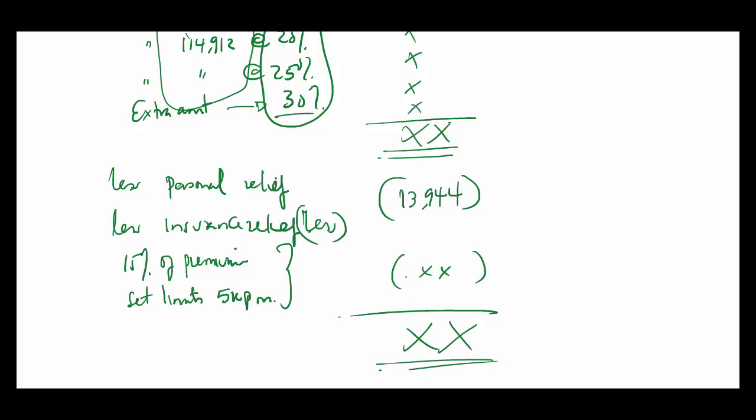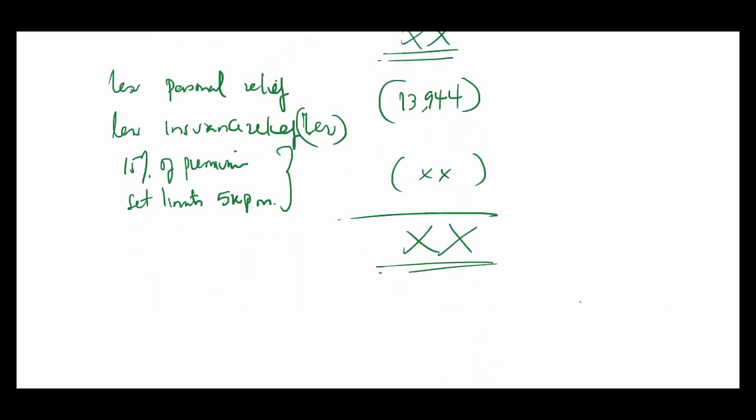Now in case you are told in the question that there was already PAYE deducted at source, you'd also have deducted it. Or if you're dealing with an income whereby the withholding tax is not the final tax—let's say you're dealing with dividends from a cooperative society or interest from a cooperative society which are not among the prescribed financial institutions, meaning that the withholding tax that they'll have charged you is not final tax—then here's where you will see less the withholding tax already deducted.